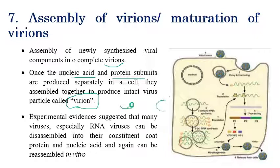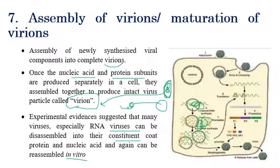The separately produced nucleic acid and protein coat are combined to produce complete matured virus particles called virions. Experimental evidence shows that RNA viruses can be disassembled into their coat protein and nucleic acid components and then reassembled in vitro. In laboratory conditions, the protein coat and nucleic acid can be separated and rearranged back into complete virus particles.